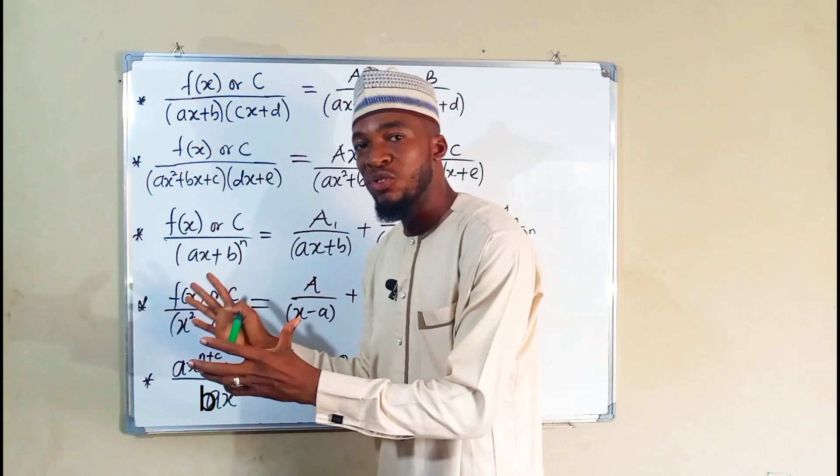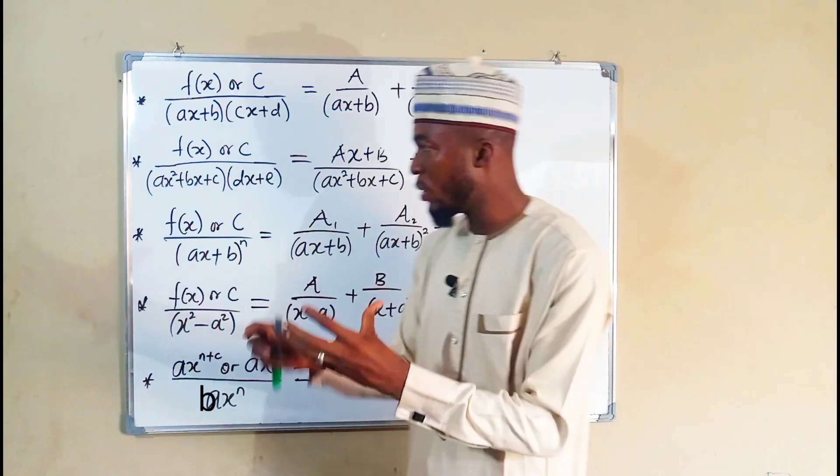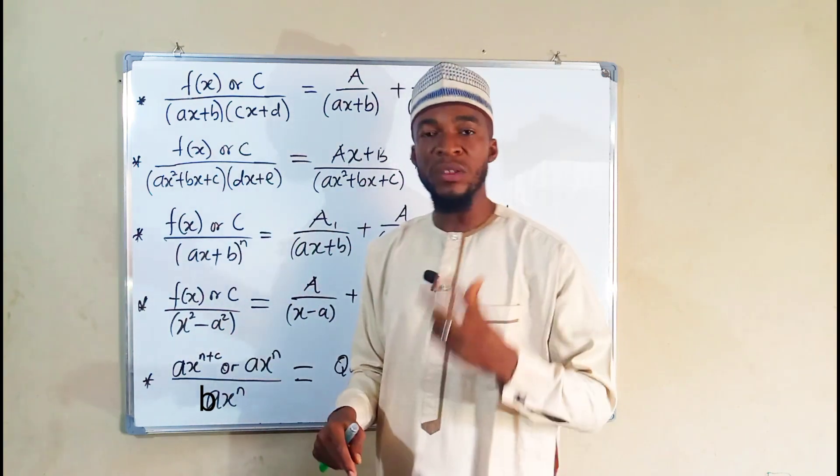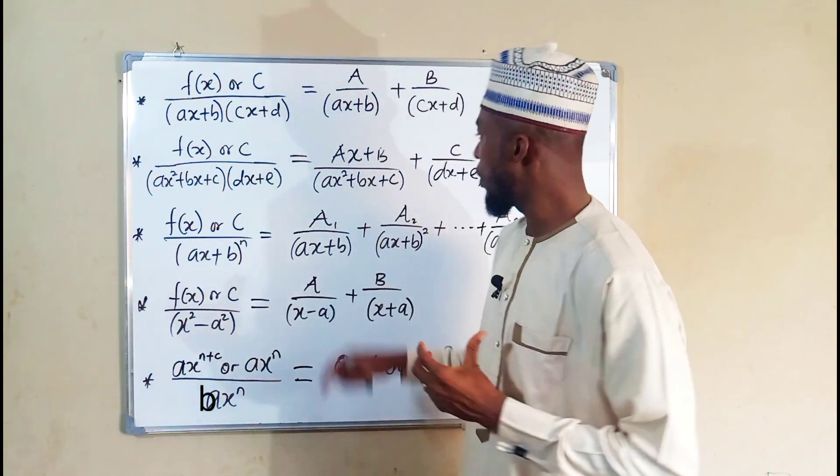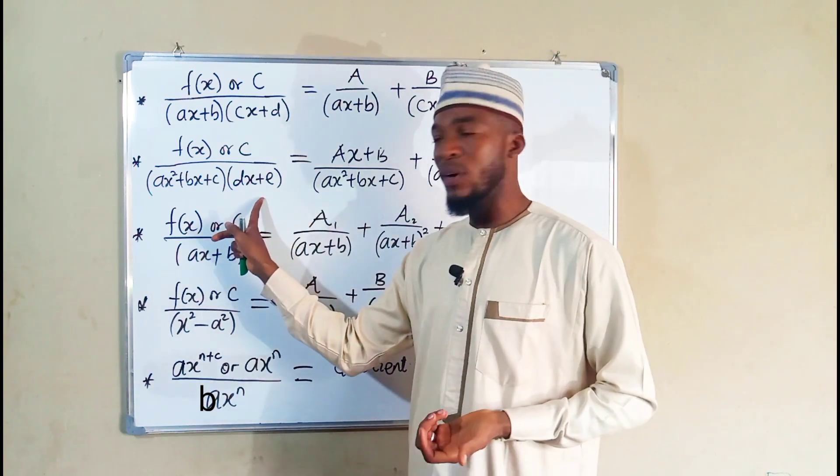But if it can be factorized, we are going to split the factors into two, all having a constant as their corresponding numerators. And you can see this is a constant divided by the other linear factor.